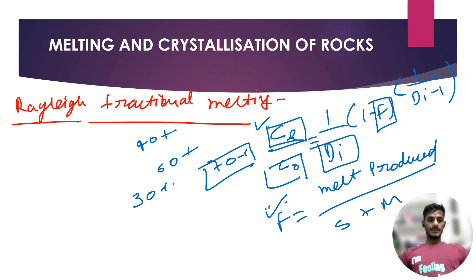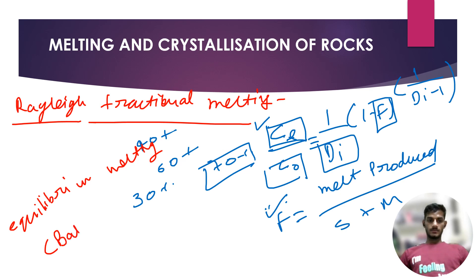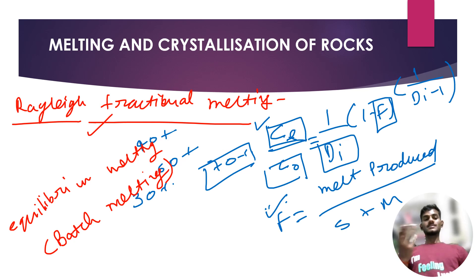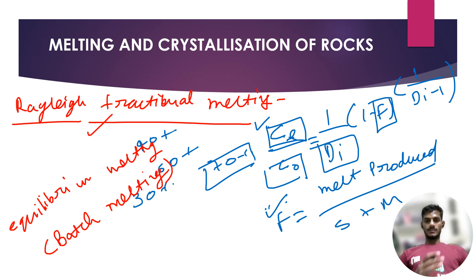One more thing: equilibrium melting is also known as batch melting. Sometimes in an exam they say 'consider there is batch melting going on' — you have to understand that batch melting is nothing but equilibrium melting. So that's all for today about the melting and crystallization of rocks. If this topic comes in your GSI mains, you can write about what fractional melting and crystallization is, what equilibrium melting and crystallization is, and their associated formulas.